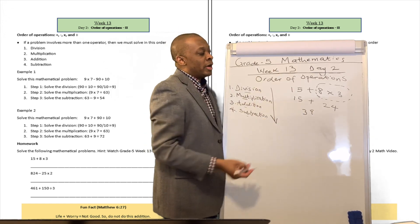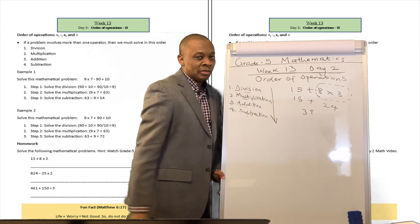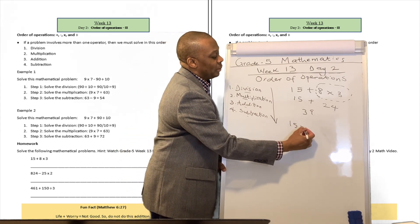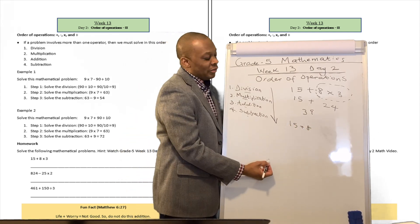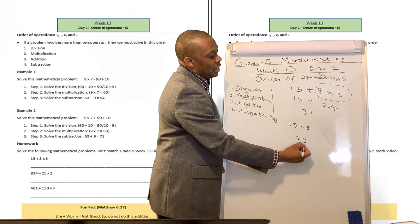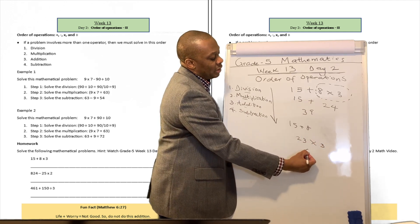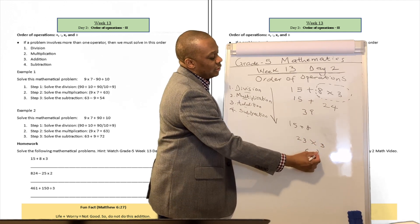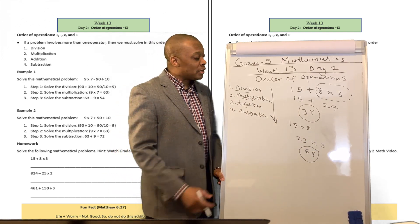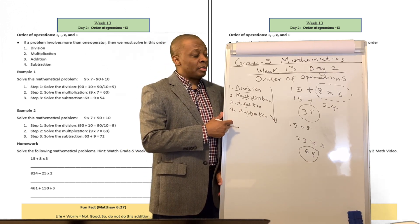But what if we flipped it around and we said, well, we're going to try to solve the addition part firstly. Let's see if we're going to get the same number. If we say 15 plus 8, that's equivalent to 23. And then 23 multiplied by 3, that's equivalent to 69. So did you see that this number is not the same as this number? Why? Because we didn't follow this order. So it's very important.